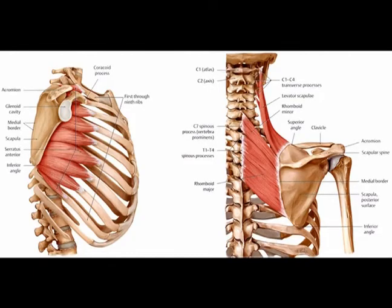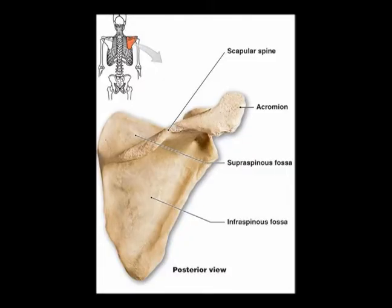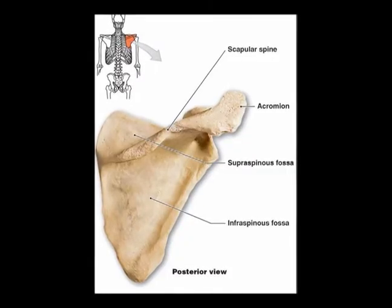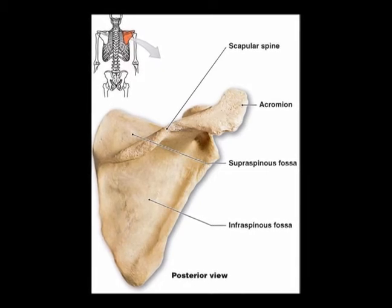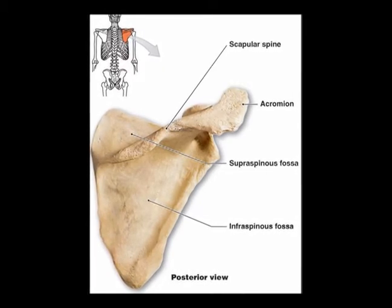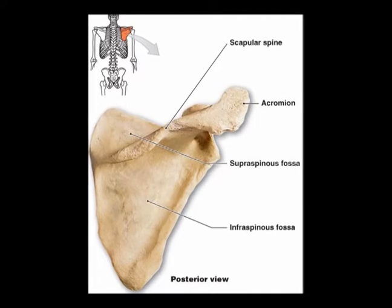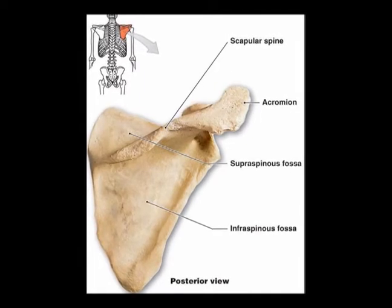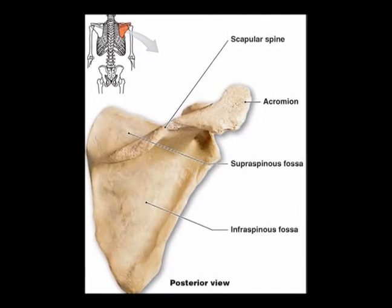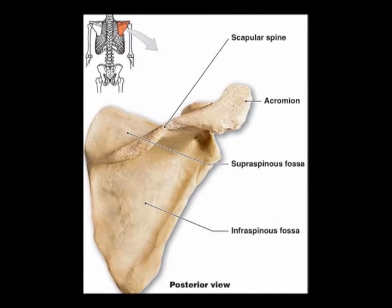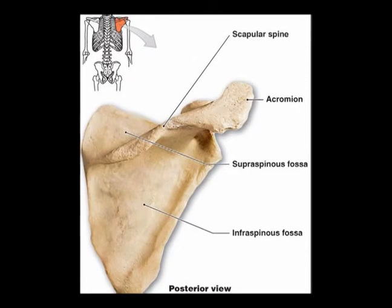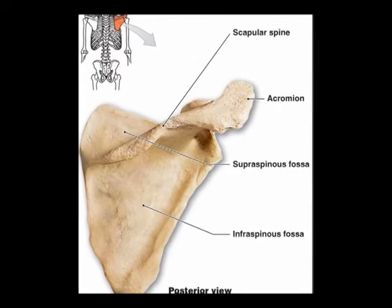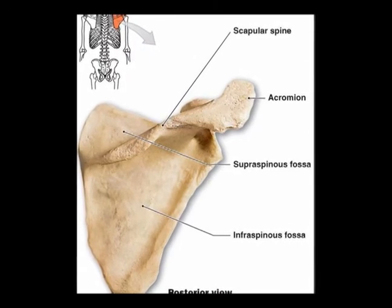Numerous muscles and ligaments attach to the scapula. In the posterior aspect of the scapula, there is a prominent ridge called the spine of the scapula, or the scapular spine. It runs medial to lateral at a superior angle. Superior to the spine of the scapula is the supraspinatus fossa, which is the origin site of the supraspinatus muscle. Inferior to the spine of the scapula is the infraspinatus fossa, which is the origin site of the infraspinatus muscle.